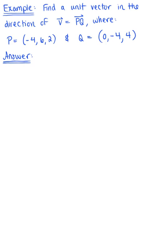Let's put that last property into action with this next example. We want to find a unit vector in the direction of vector v, defined by the directed line segment PQ, where P is the point (-4, 6, 2) and Q is the ordered triplet (0, -4, 4).